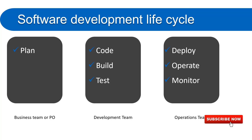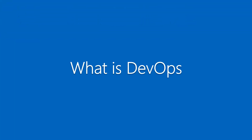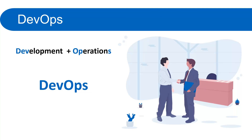So right now we have three teams working on a particular product. Earlier in the waterfall model, all these teams worked independently. When agile came into picture, the gap between the business team and the development team was filled — the product owner and development team started working together. However, there was still a gap between the development team and the operations team.